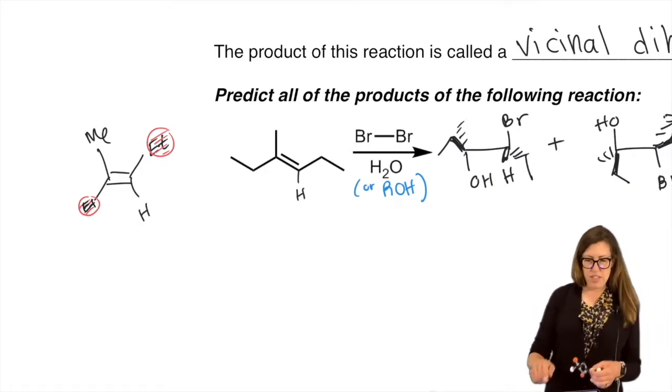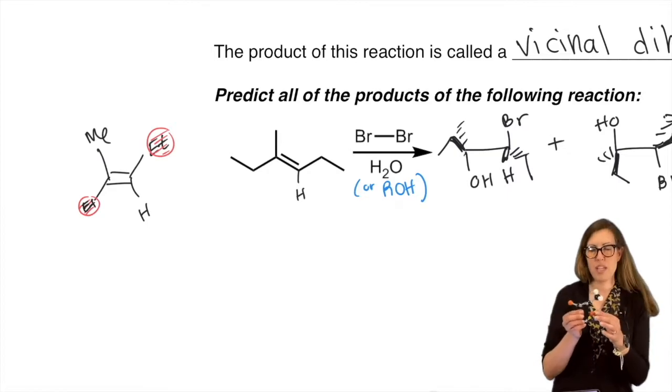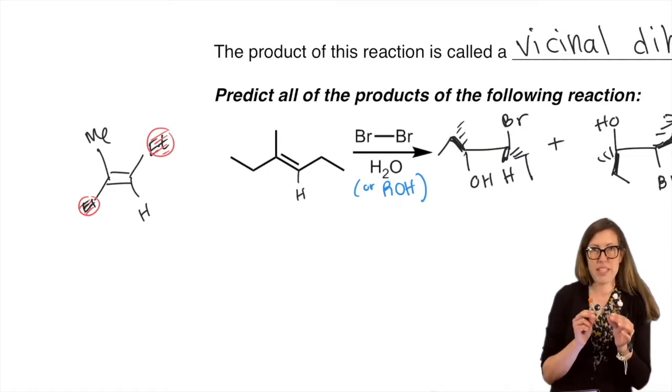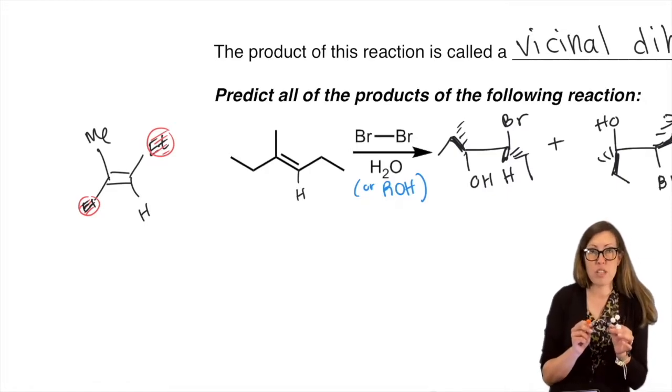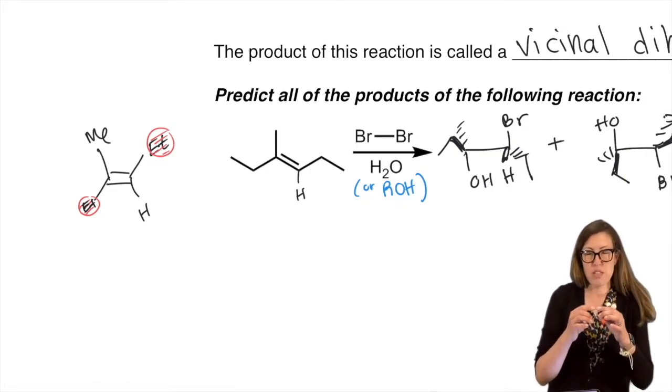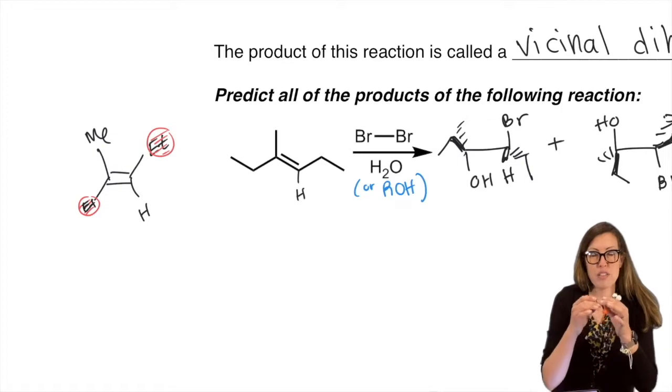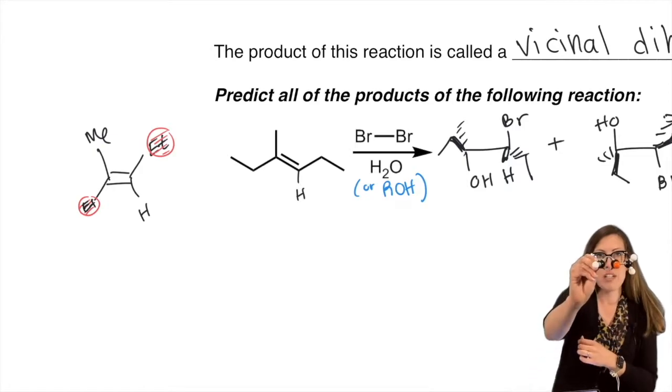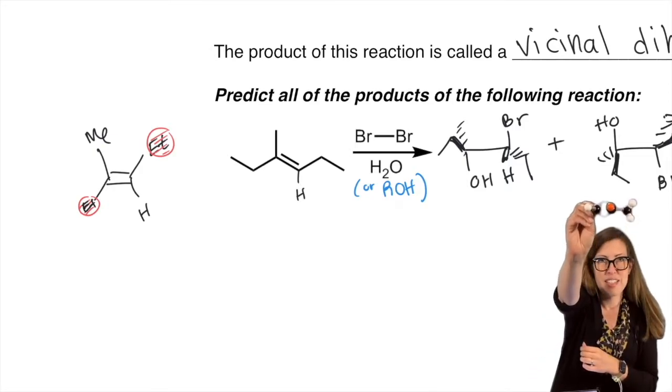The whole reason I'm doing this exercise is because we've been making sure to draw alkenes planar because they are. All of the groups, if you built your model correctly - by the way, use the bendy bonds, the really long flexible ones to make your pi bond - if you don't do that they won't fit together.